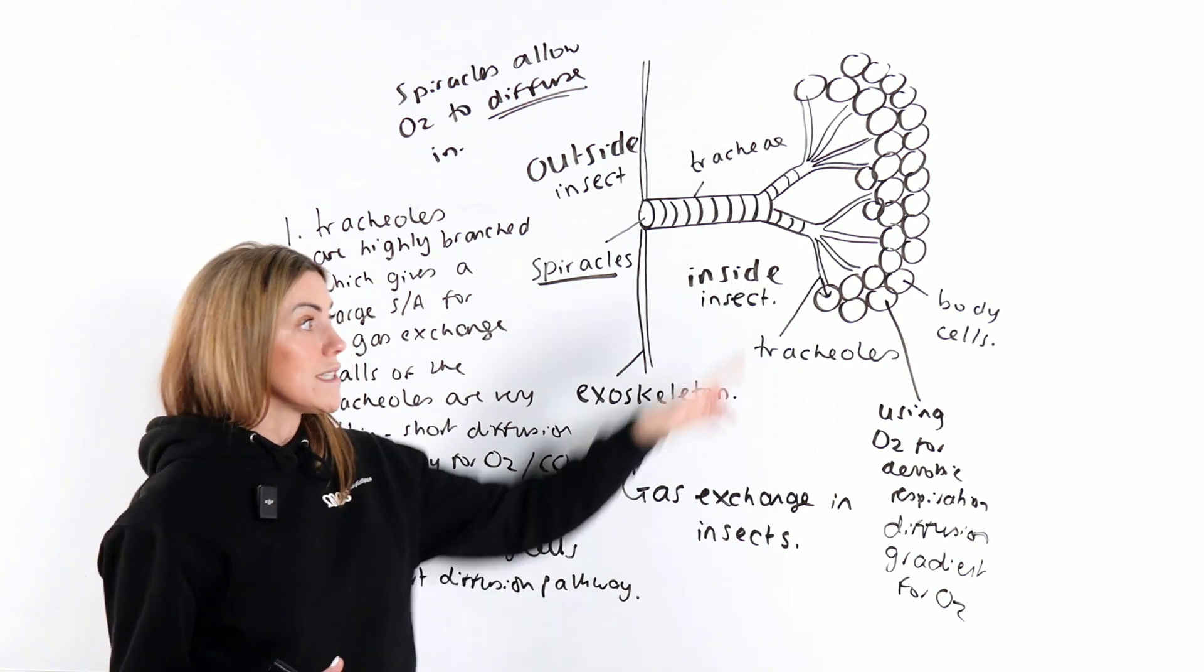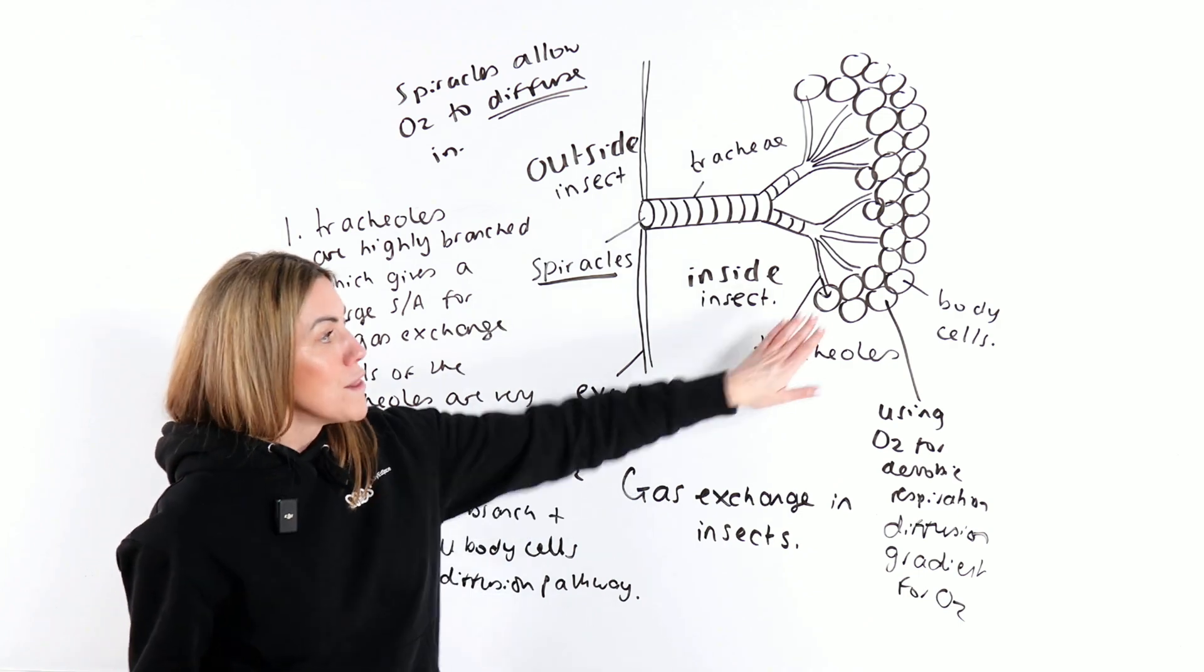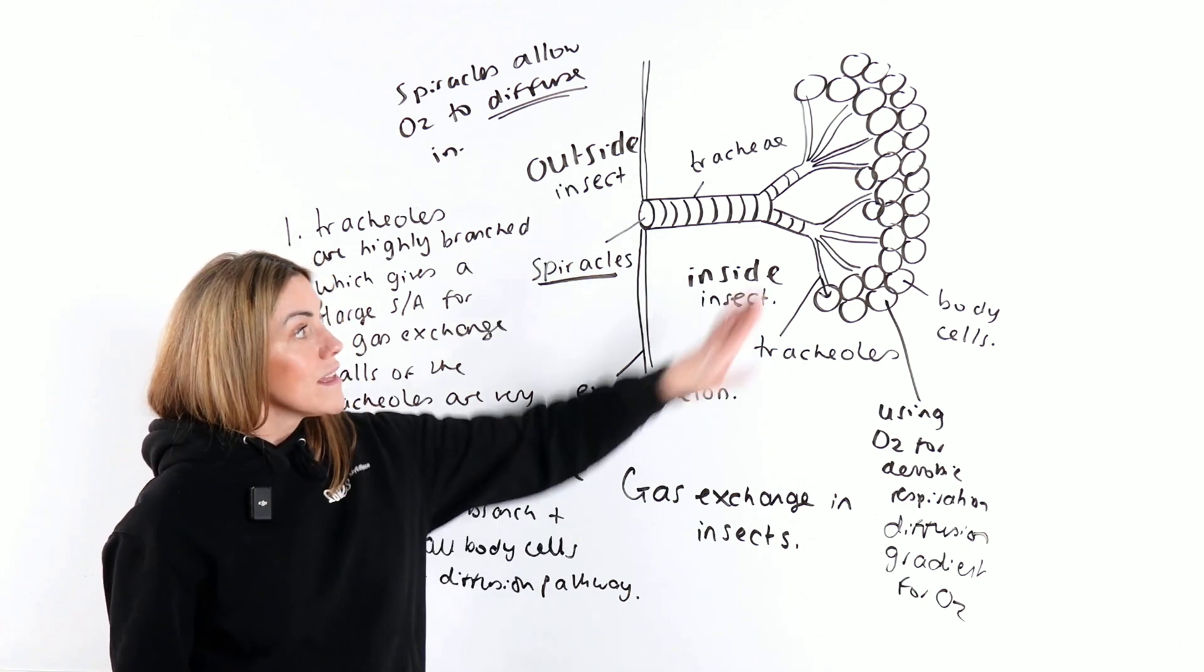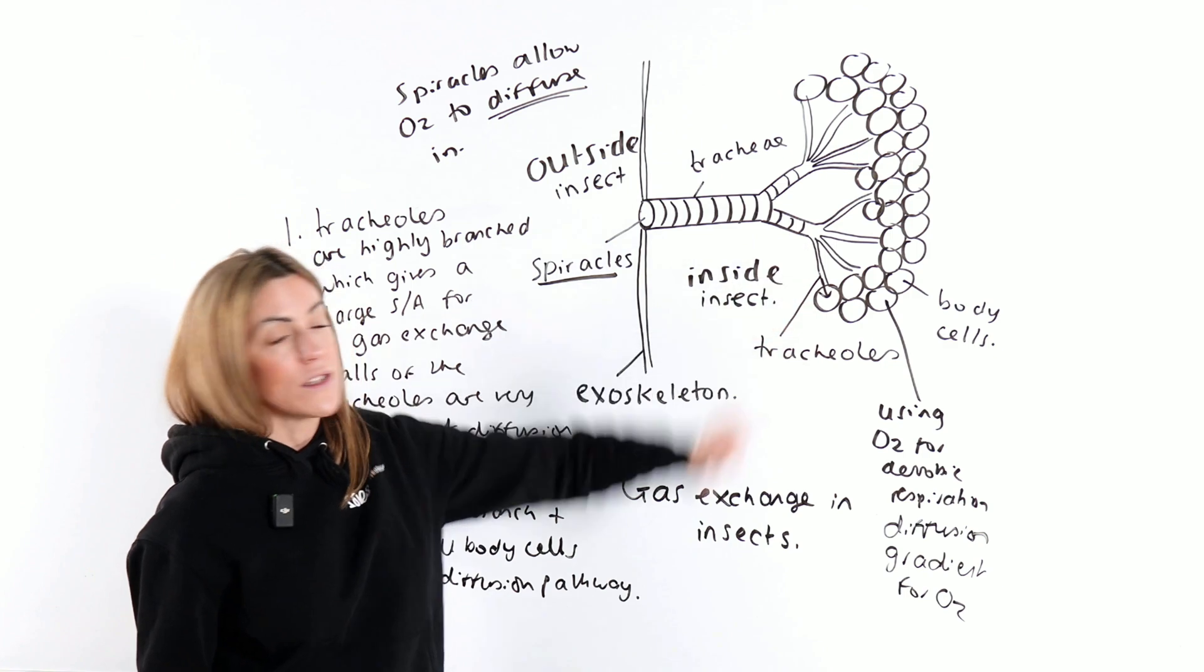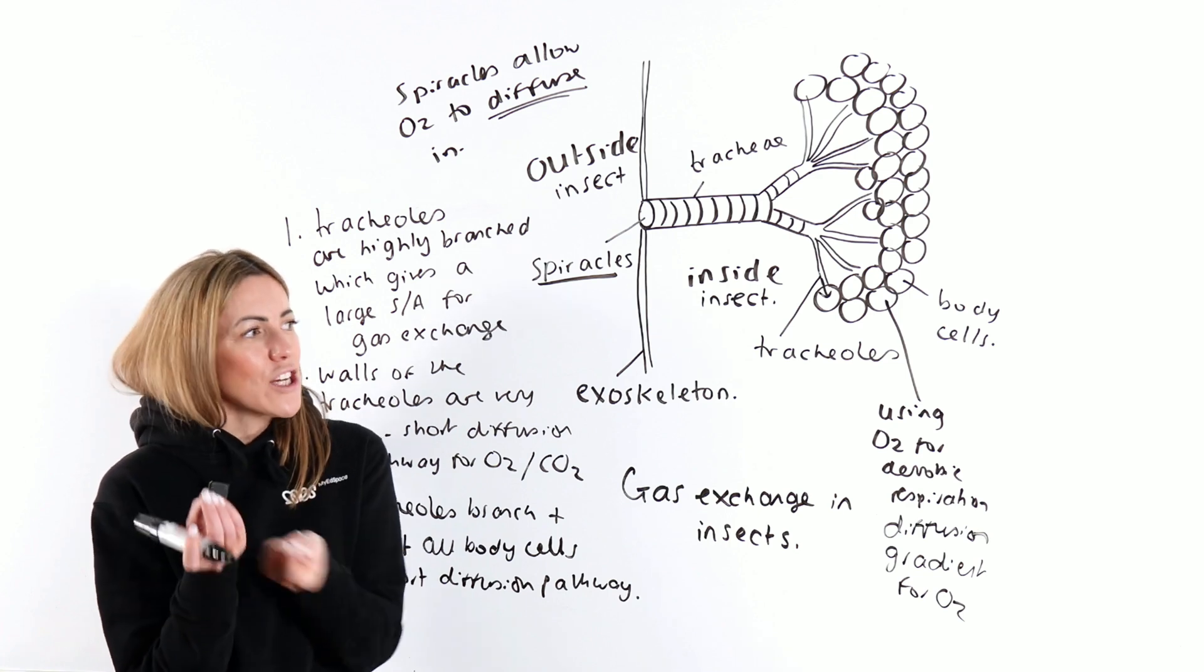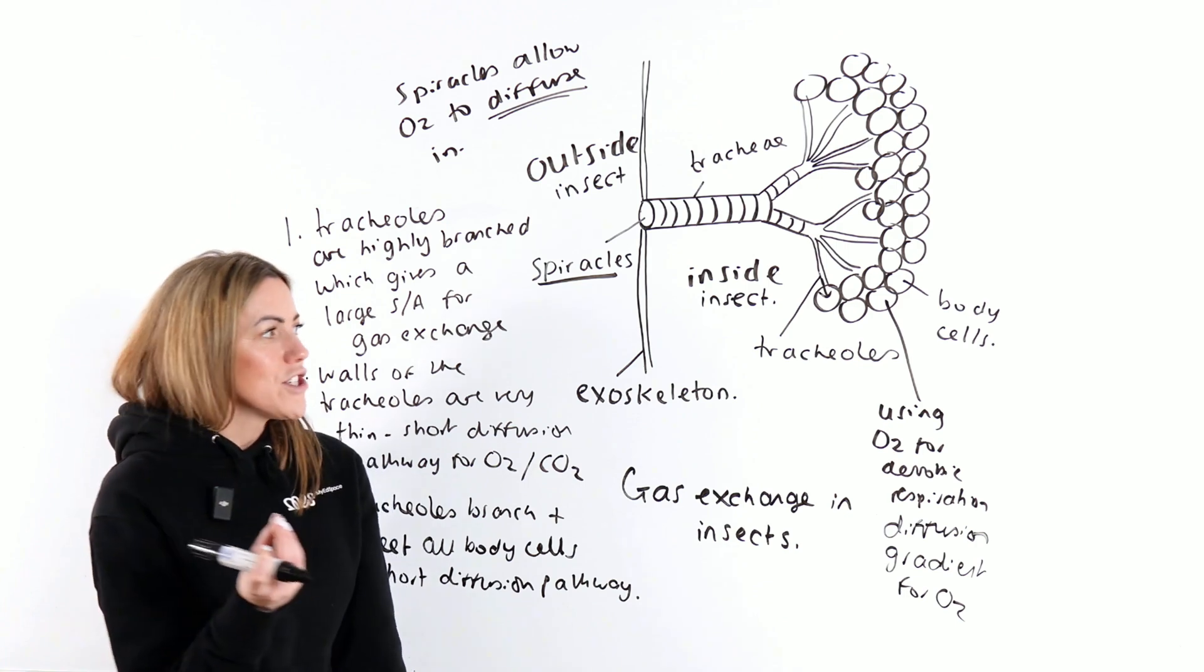It's the same for CO2. CO2 will diffuse the other way simply because it's diffusing down its concentration gradient. The body cells are making CO2, so there's a higher concentration in there than in the air in the tracheoles, so it will diffuse the other way. Now, there's a couple of extra bits that we could add on to this topic that might come up.